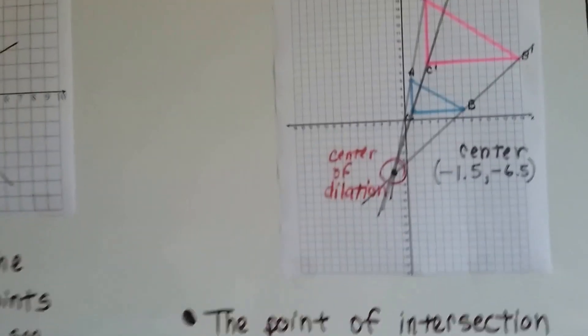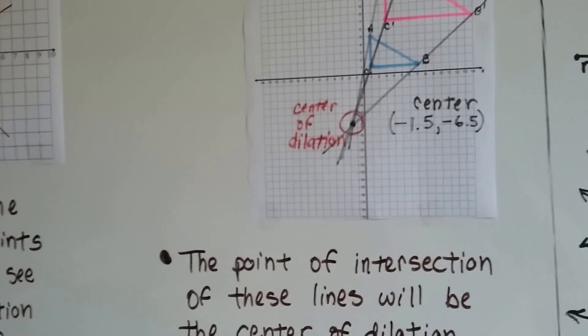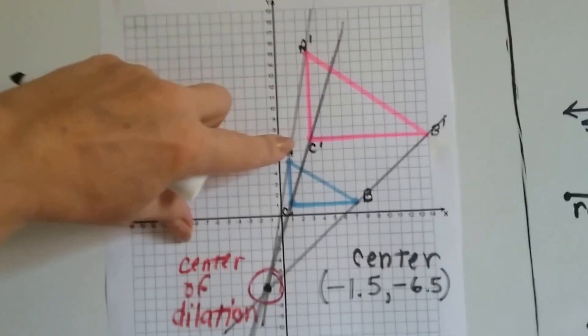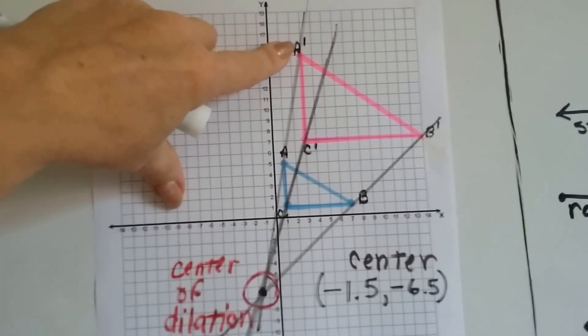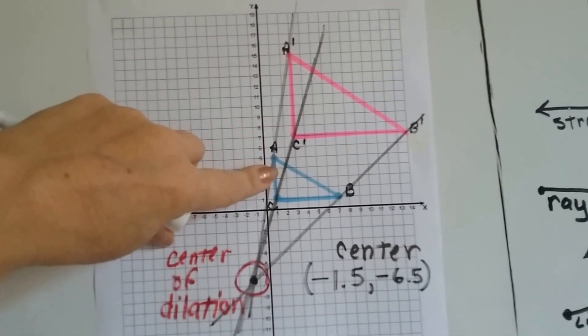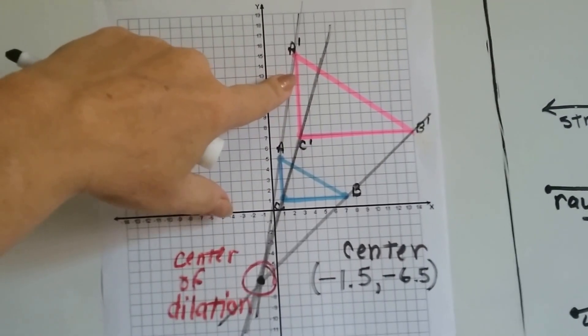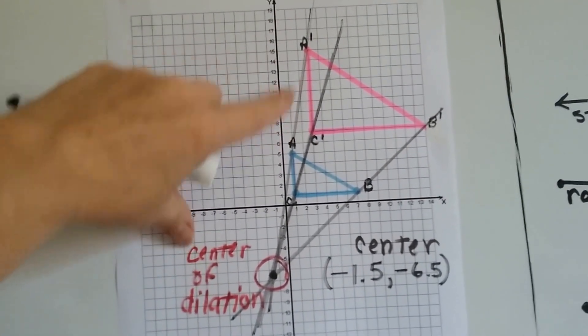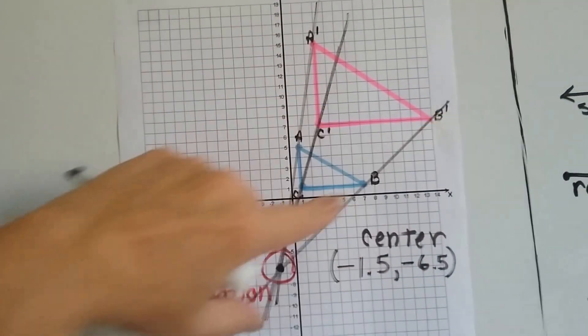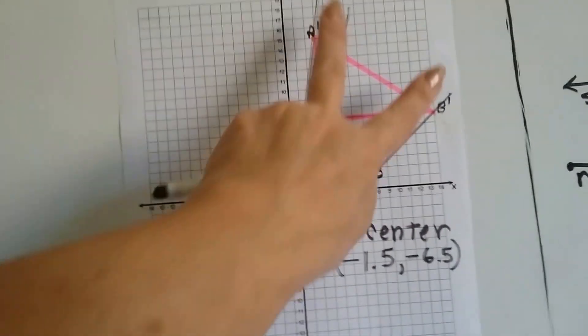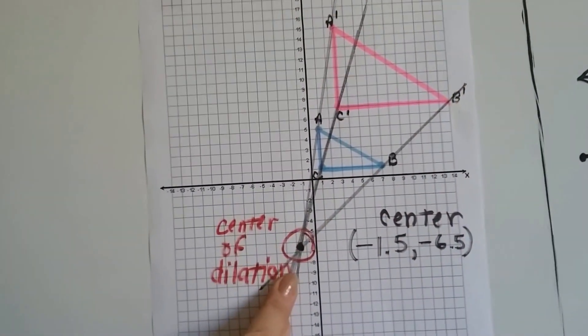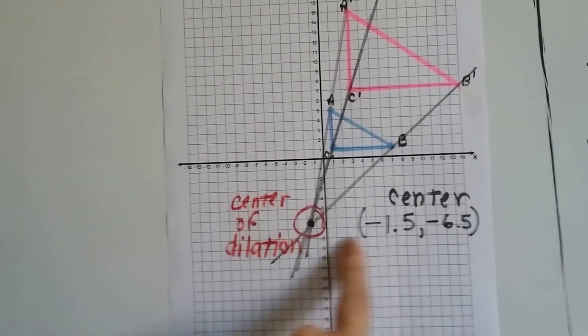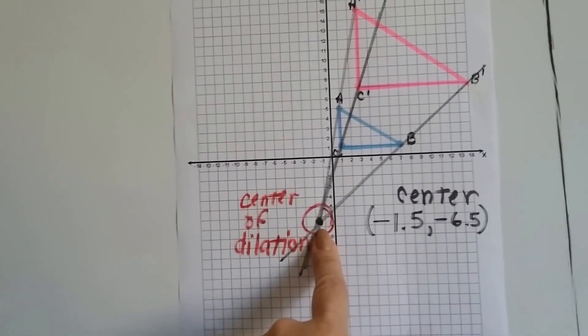Now look at these triangles. The point of intersection of these lines will be the center of dilation. The blue is the original, the pink is the copy with prime notation. We connect a to a prime, b to b prime, and c to c prime, and we see where these three lines meet. They meet at negative one and a half, negative six and a half. That's the center of dilation.